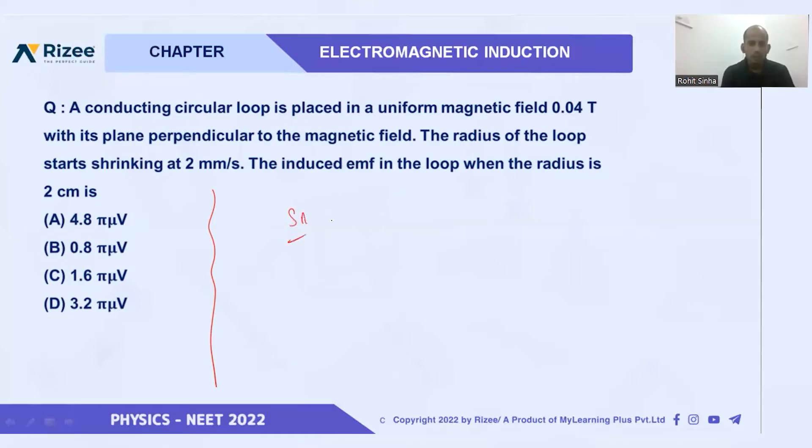Okay, let us see now. It is telling that a circular conducting loop is given. See here, the radius of the loop is also given.